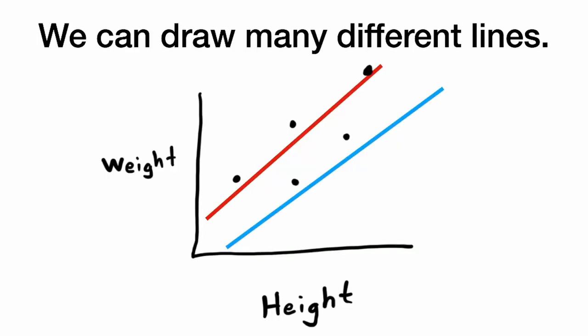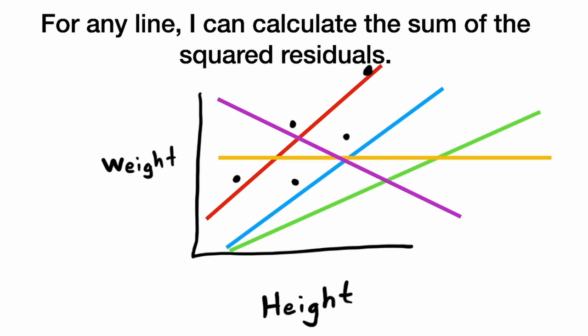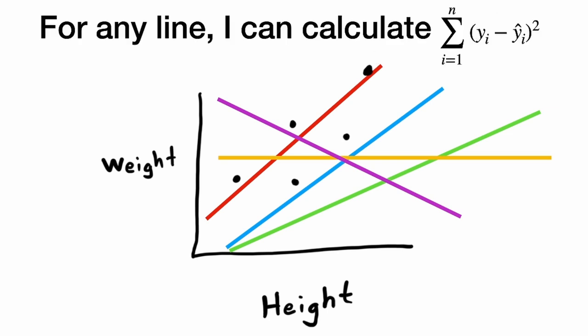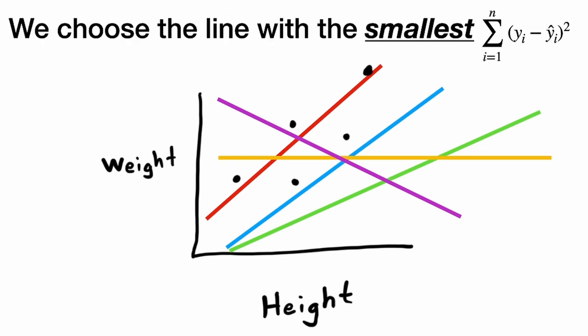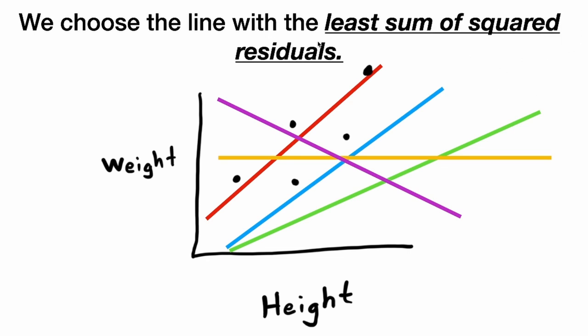Now, there aren't just two possible lines we could draw. We could draw this line, or this line, or this line. For any line, I can calculate the sum of the squared residuals. For any line, I can calculate the sum of the yi minus y-hats squared. And we choose the line with the smallest sum of the squared residuals. We choose the line with the least sum of the squared residuals. That's why it's called least squares regression.